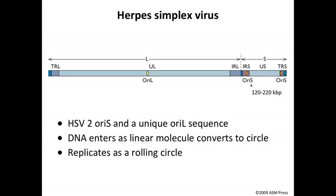These viruses have three different origins of replication: one Ori-L and two Ori-S origins. The interesting aspect I want to discuss is that the DNA enters the cell as a linear molecule, where it is apparently converted to a circle and then replicates as a rolling circle. These origins are active under different conditions in the cell — something we'll discuss in the last session of this week. For now, let's focus on the mechanism of DNA replication, how it's primed, and how it deals with the five prime end problem.